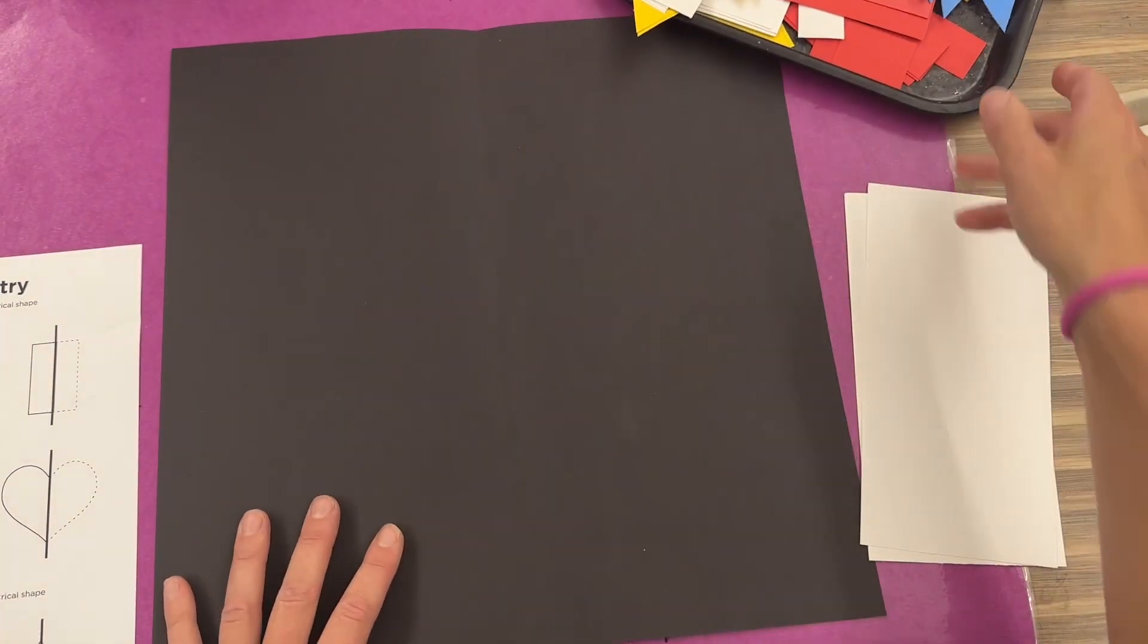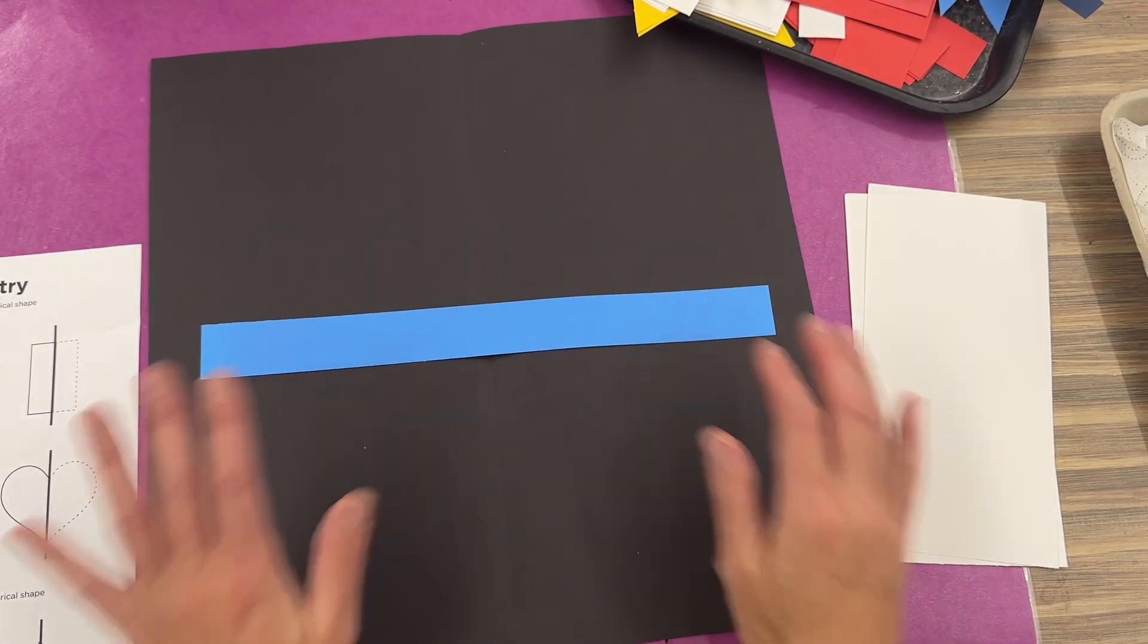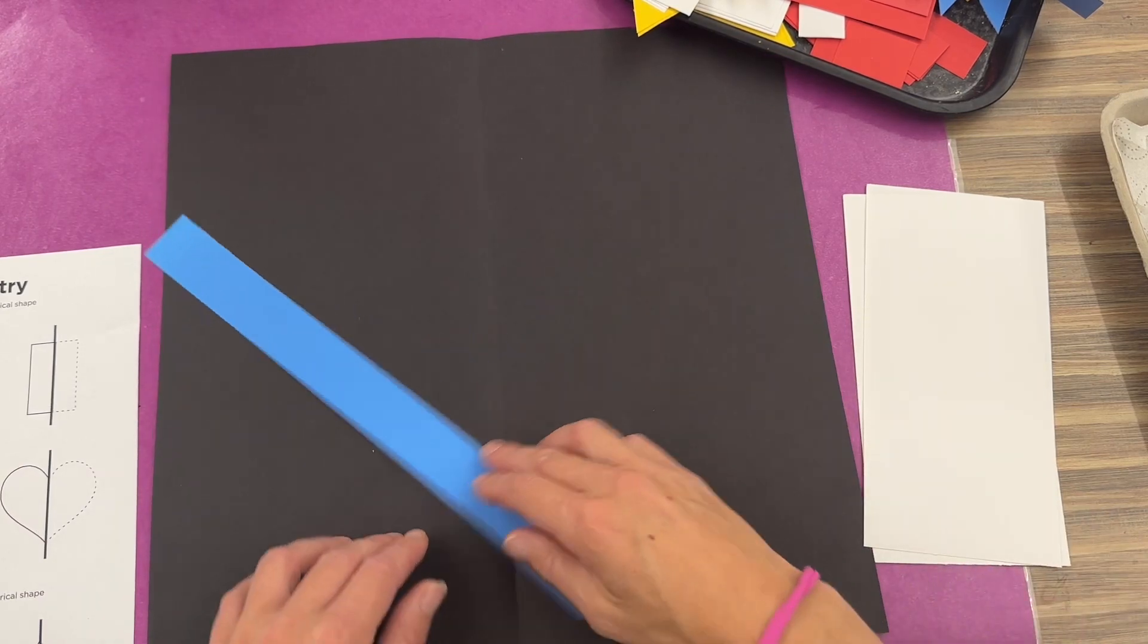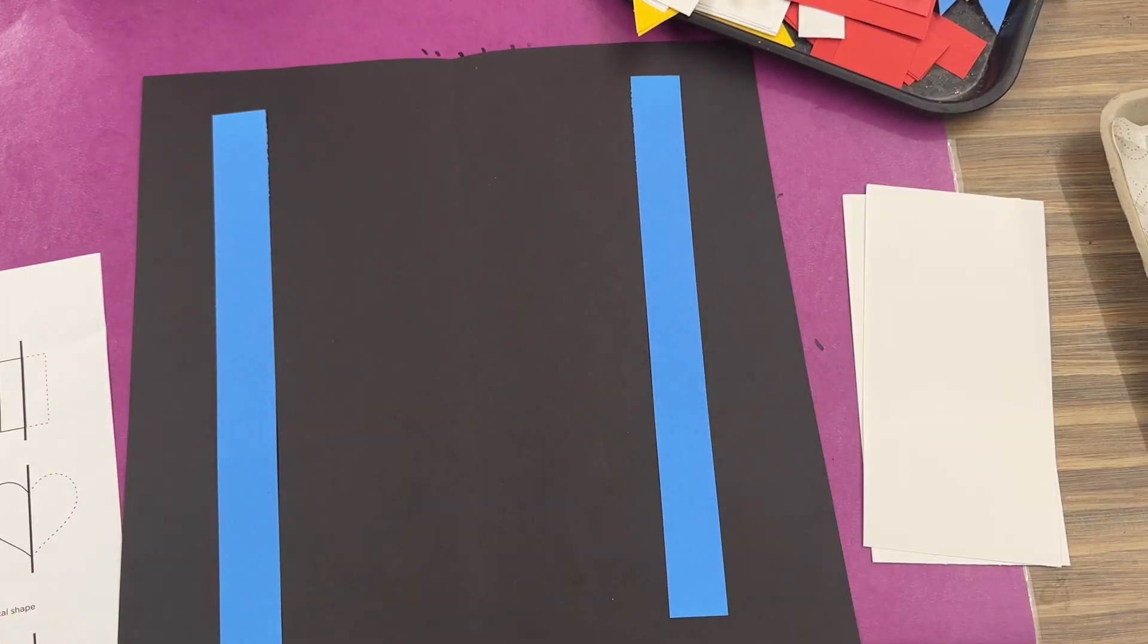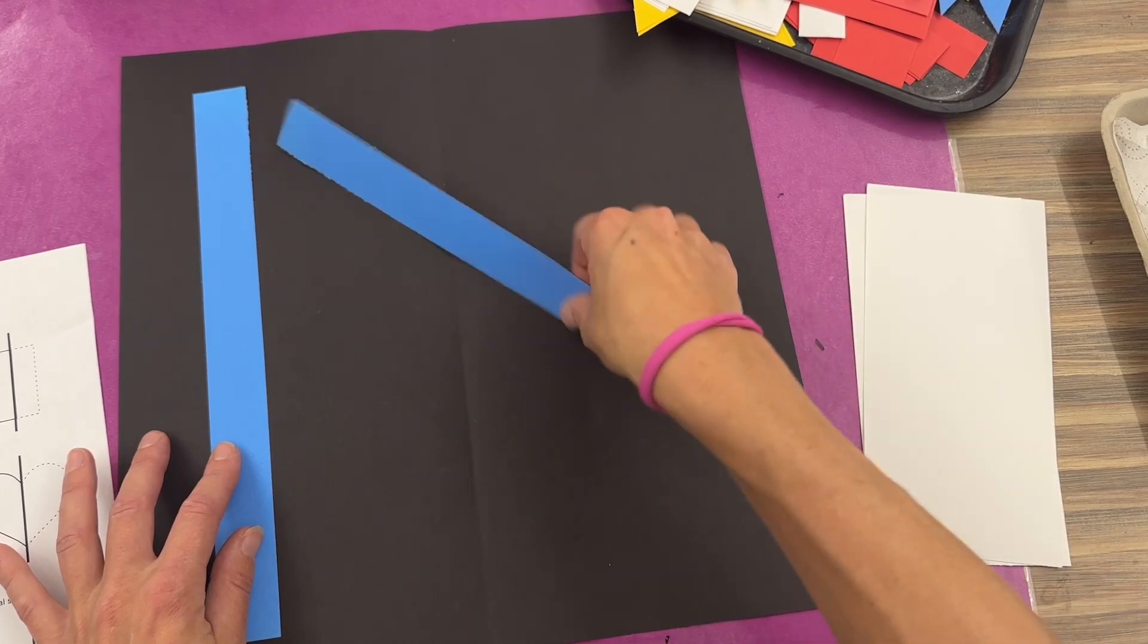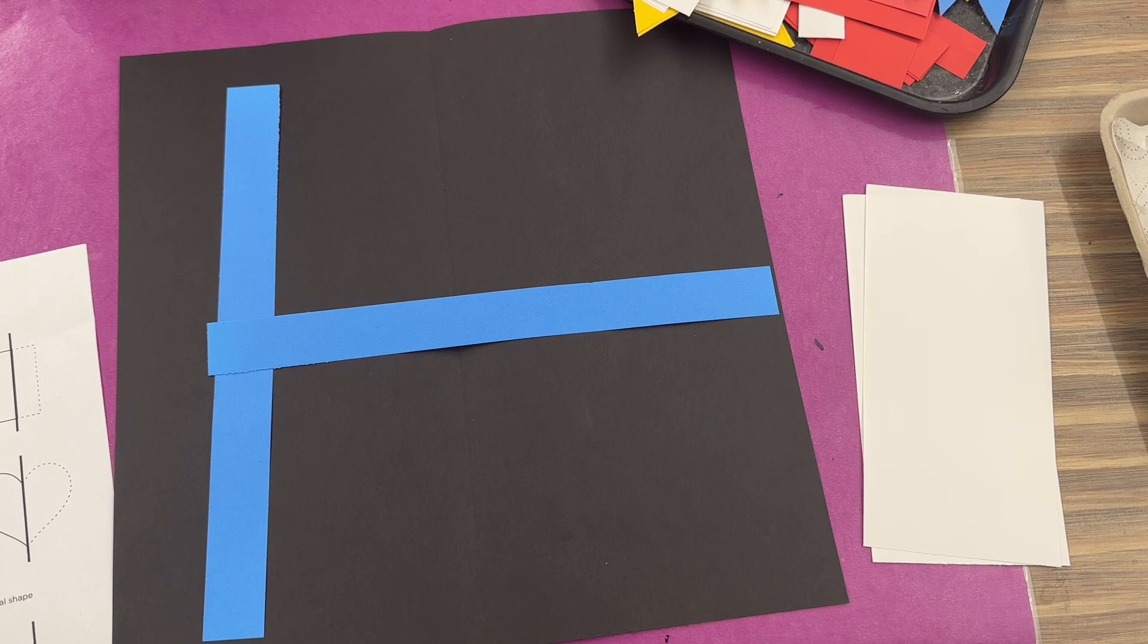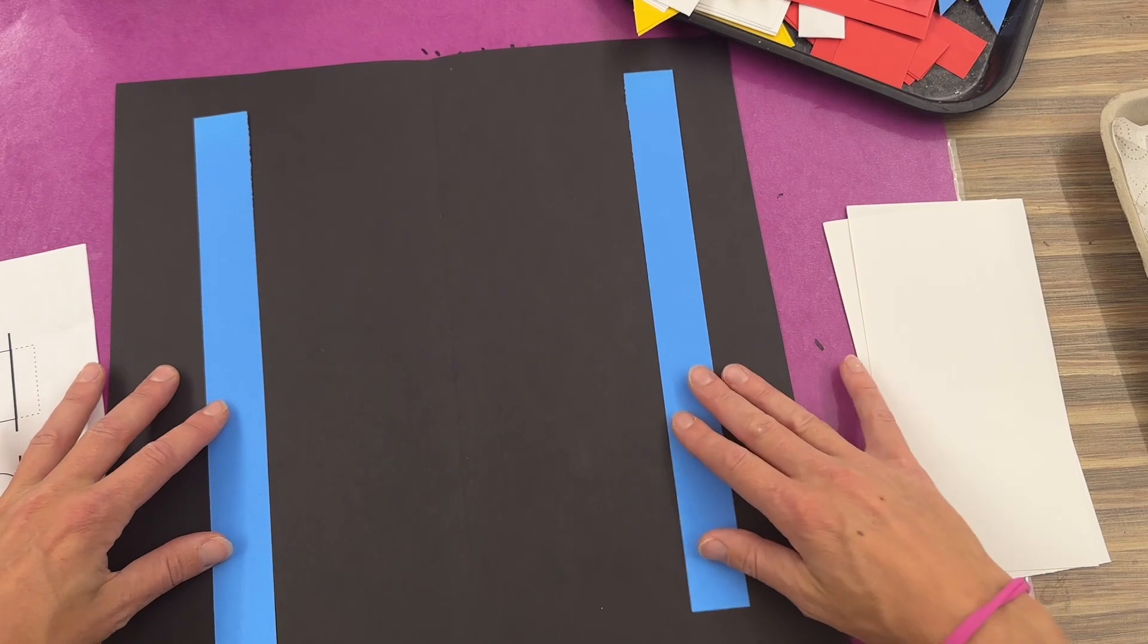Now when you're putting your shapes on you could put it in the middle of your paper. That would create a symmetrical design. You can put one on one side, one on the other side just like that. Could I do this? Would this be a symmetrical design? No, that would be an asymmetrical design when it is not the same on both sides.